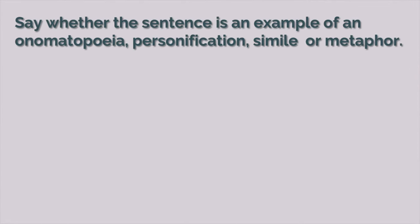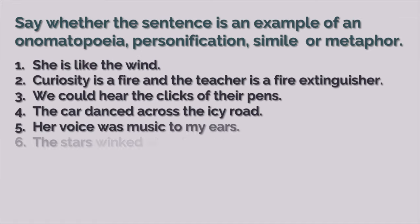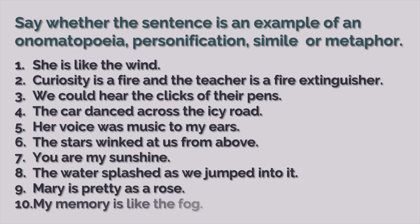So, let's do some exercises. Say whether the sentence is an example of onomatopoeia, personification, simile, or metaphor. You can use O for onomatopoeia, P for personification, S for simile, and M for metaphor. Pause the video and tell me your answers. Let's look at the key now.